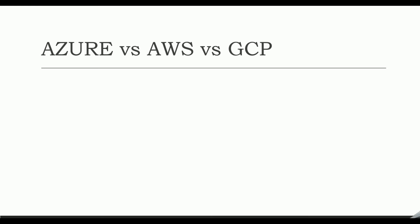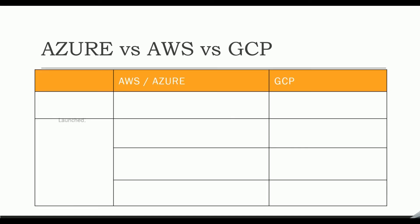Without getting into market share, services, or geographic locations, let me make it simple. AWS was launched in 2006 and Azure in 2010, whereas GCP was launched in 2011.